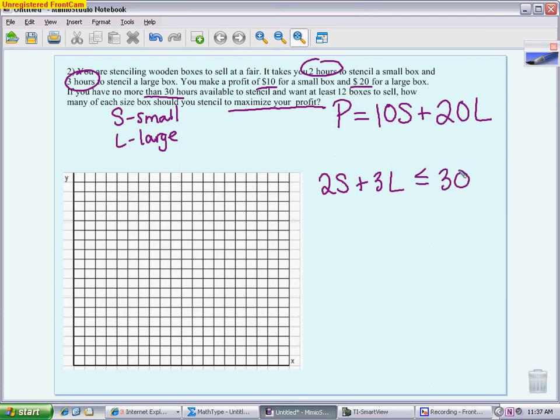We have one more constraint, and it's the amount of boxes that I need to sell. It comes from this phrase right here: I want to sell at least 12 boxes. So what that means is if I take my small and my large and add them together, they have to be greater than or equal to 12. So I have my objective function and my two constraints.